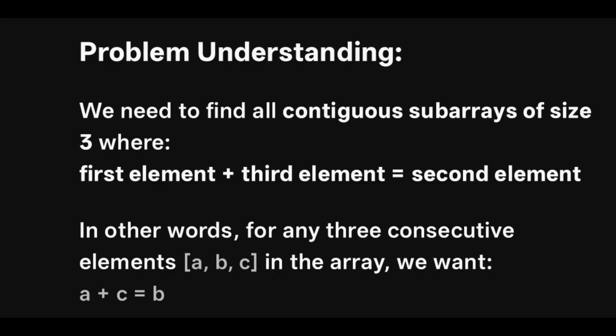Question 2: Given an integer array of n elements, find the total number of subarrays of size 3 such that the sum of the first and third elements equals the second element. In other words, for three consecutive elements a, b, c in the array, we want a + c = b. Input 1 is an integer array of size n; Input 2 is the integer value n representing the array size.